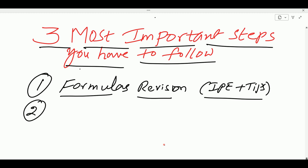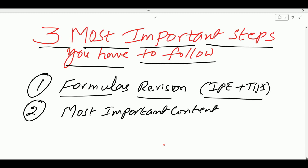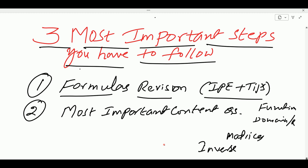The second step is different types of important content questions. For example, you can find functions — domain and range questions are compulsory. Also, matrices and inverse matrix based questions are important. Determinants have some questions; some parts are deleted. Inverse matrix also. Joint points based questions — chapter-wise, that is the most important content questions to practice and revise.